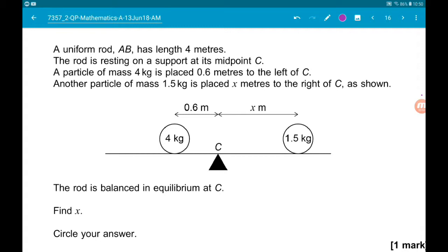A uniform rod AB has a length of 4 meters. The rod is resting on a support at its midpoint C. A particle of mass 4 kilograms is placed 0.6 meters to the left of C.